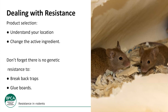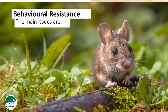Dealing with resistance: understanding your location is key. The resistance mapping is very helpful — check it to see what resistant strains have been found in your area, and help contribute to tail sampling. Change the active ingredient — don't use a product you know there's resistance to; you're basically just feeding them, promoting further resistance in that area. Switch to an active ingredient that will work in your area. There's no genetic resistance to breakback traps or glue boards, so physical methods of control are still valid options when dealing with physiological resistance.